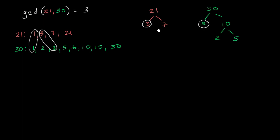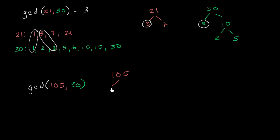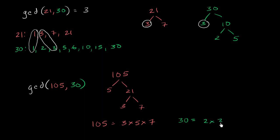Let me give you another interesting example to get a sense of things. Let's say we care about the greatest common divisor of 105 and 30. Using the prime factorization method might be clearer here, because figuring out all the factors of 105 can be a pain. With prime factorization: 105 is divisible by 5 — it's 5 times 21, and 21 is 3 times 7. So the prime factorization of 105 is 3 times 5 times 7. The prime factorization of 30 is 2 times 3 times 5. So what prime factors do they have in common?